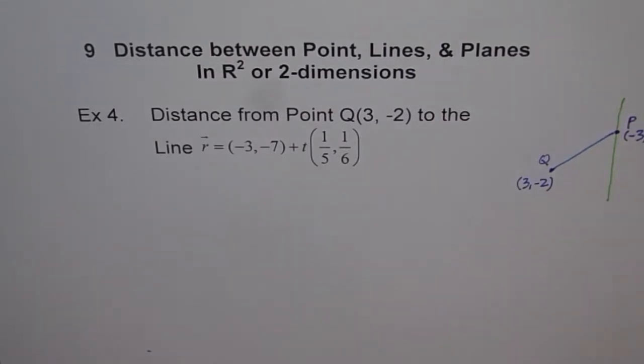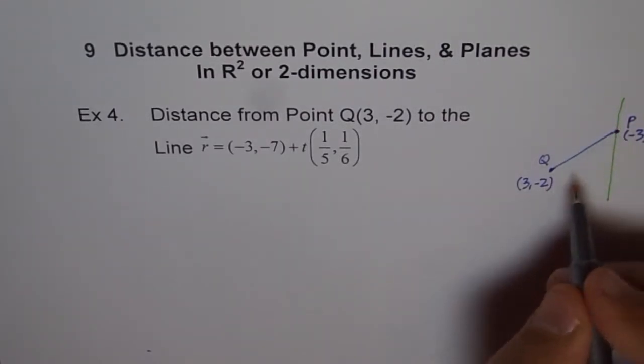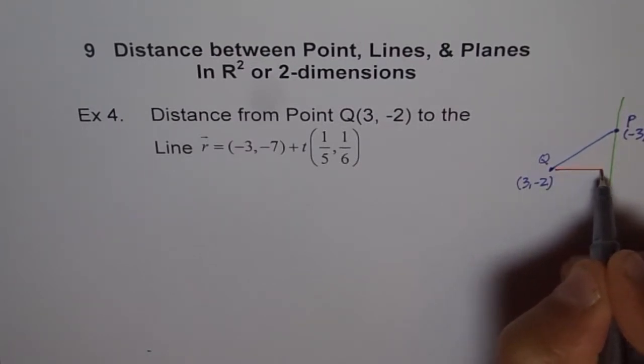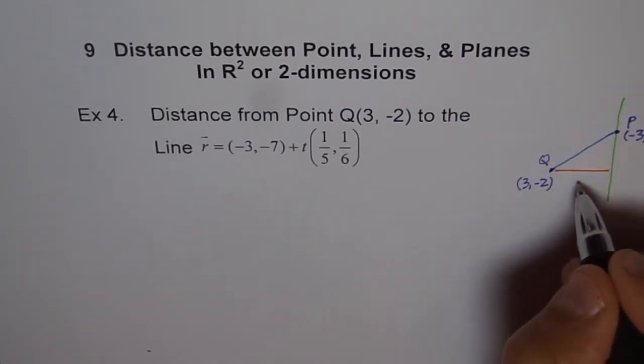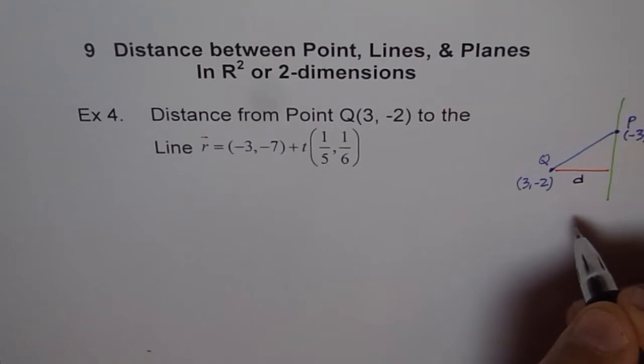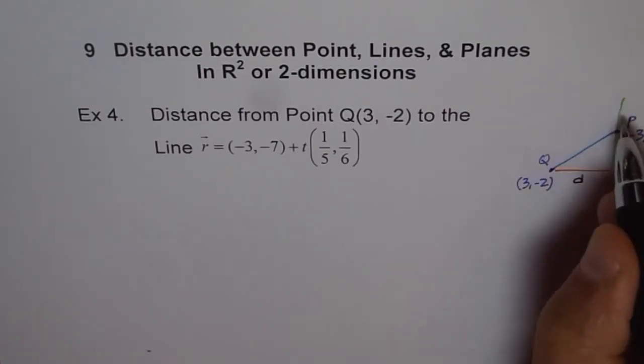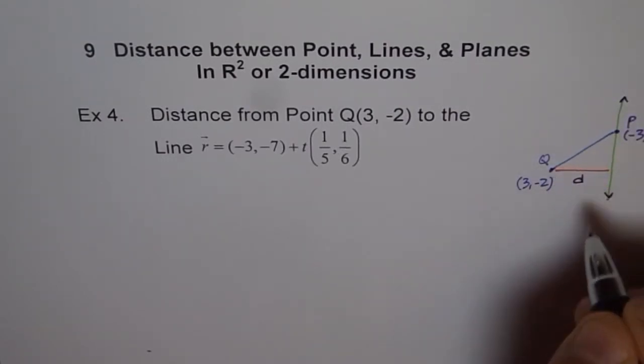The shortest distance for us is not PQ, right? The shortest distance is the one which is perpendicular to the line. That is the shortest distance, and we are interested in finding this distance. We call this distance D. This distance is normal to the line.